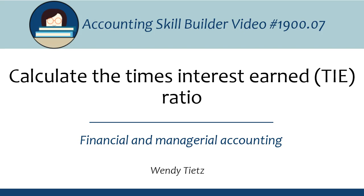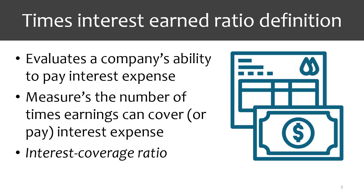In this video, we are going to walk through how to calculate the times interest earned ratio. The times interest earned ratio, or TIE, evaluates the company's ability to pay interest expense. This ratio measures the number of times earnings can cover, or pay, interest expense. This ratio may also be called the interest coverage ratio.